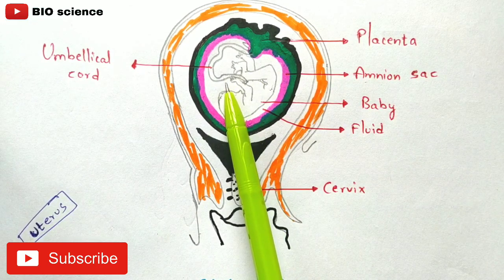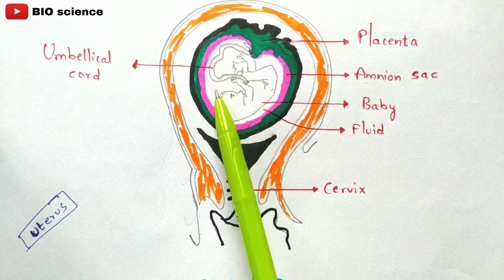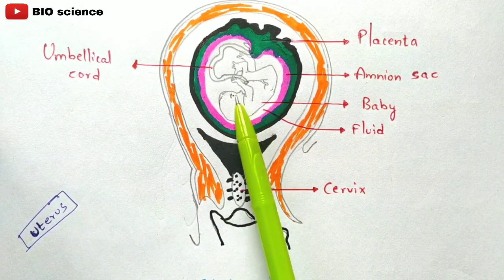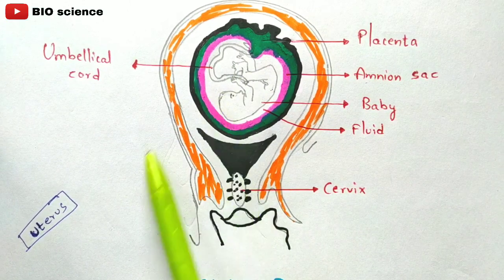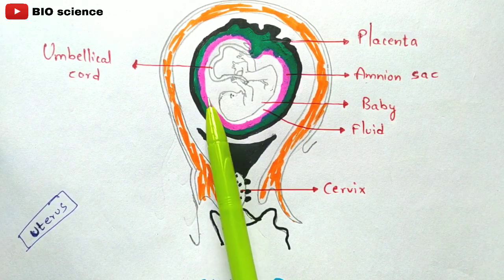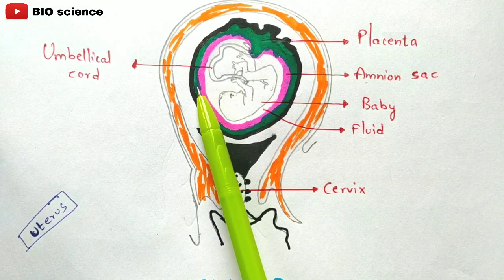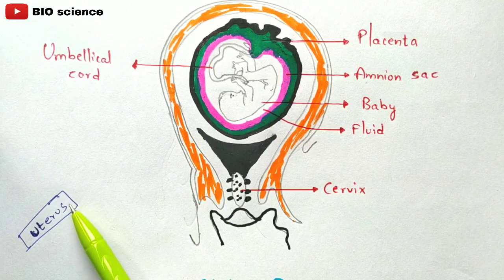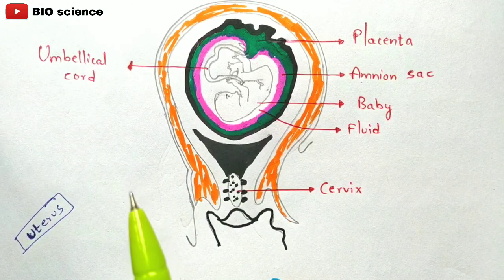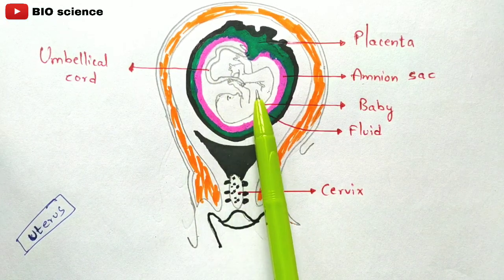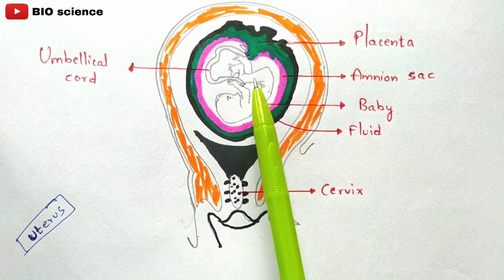This process continues throughout eight months, and in the ninth month the delivery will be done. As the size of the baby gradually increases, the diameter of the uterus also increases because the uterus muscles get elongated. From the outside you can see the big stomach — the stomach size gradually increases because the baby is growing inside the uterus and the uterus muscles are stretching.